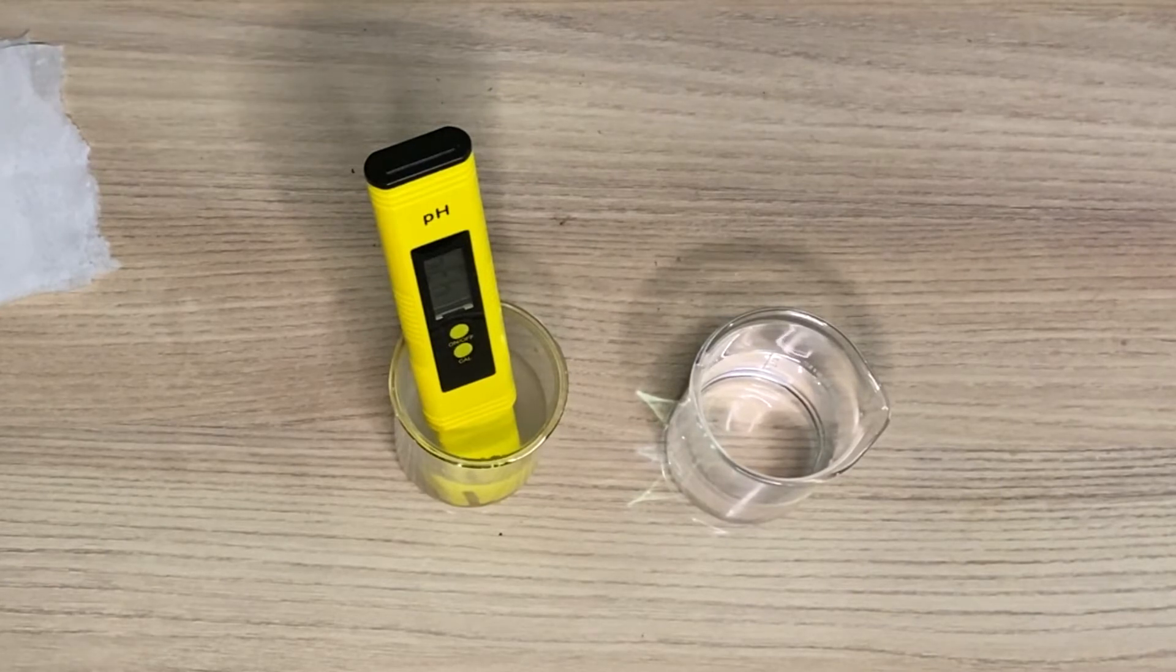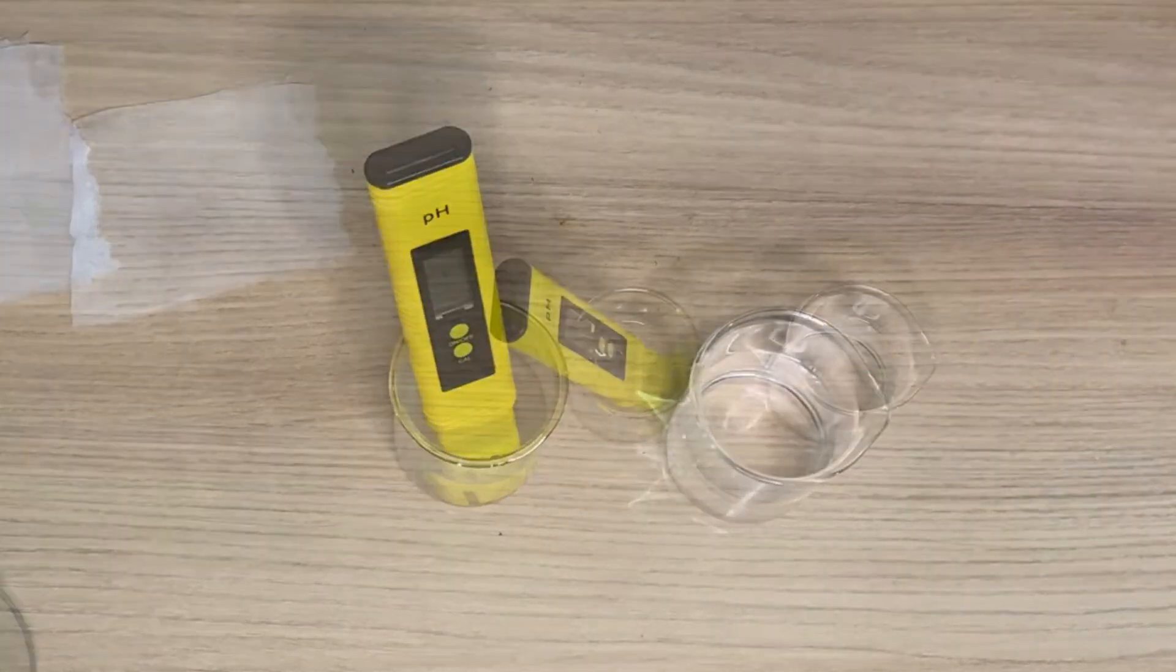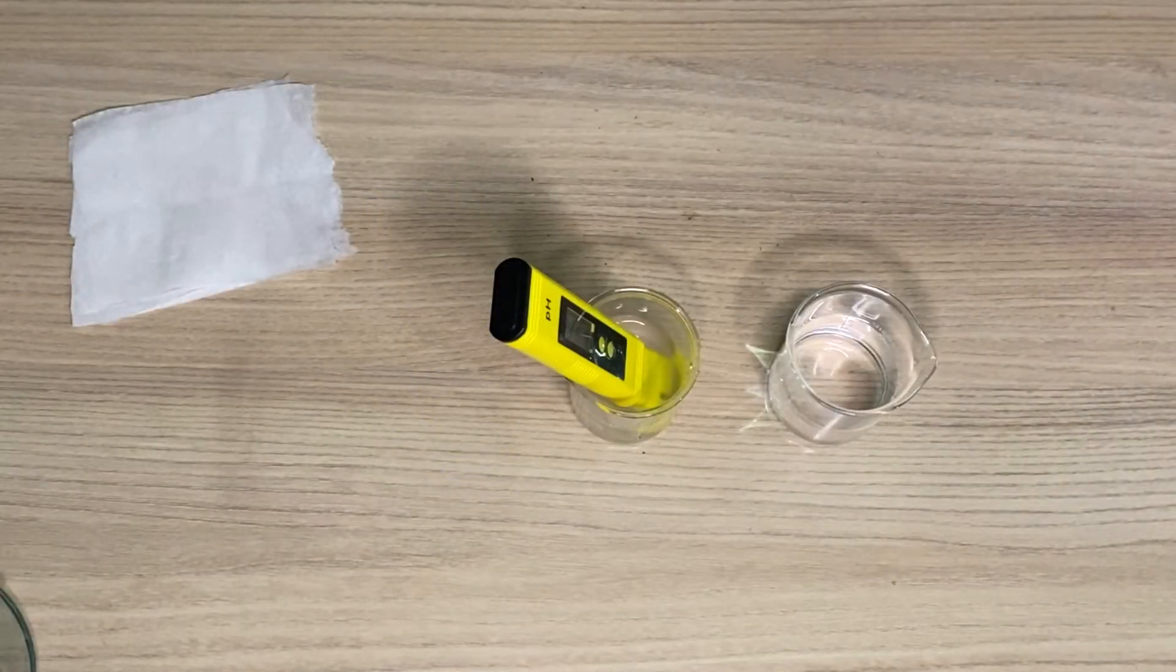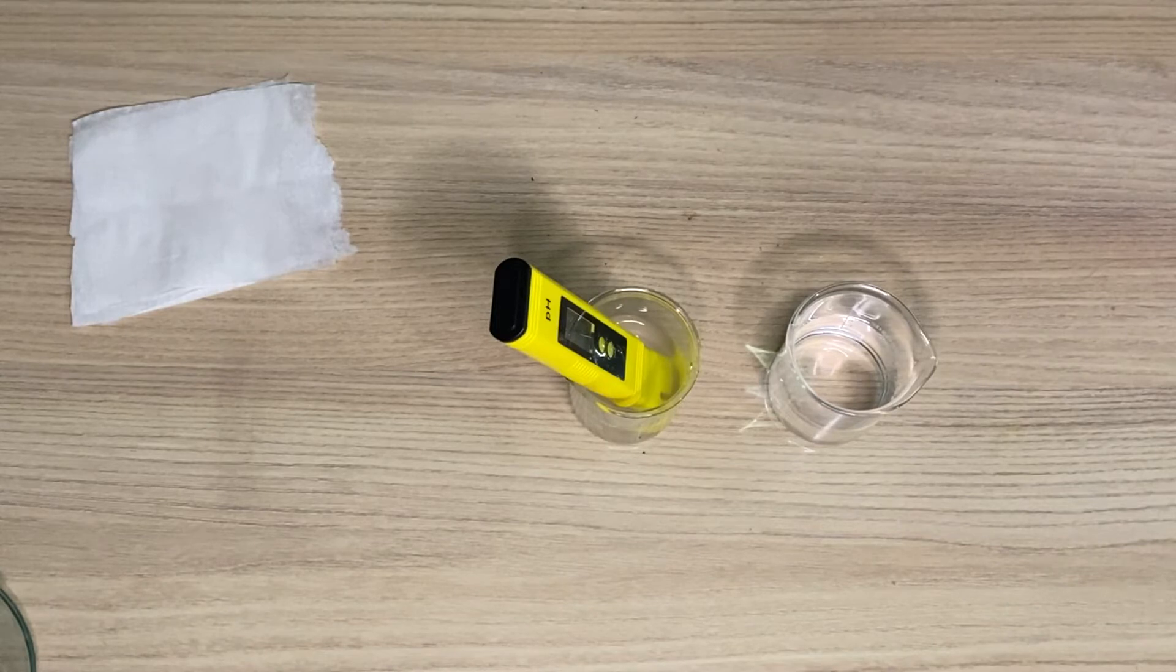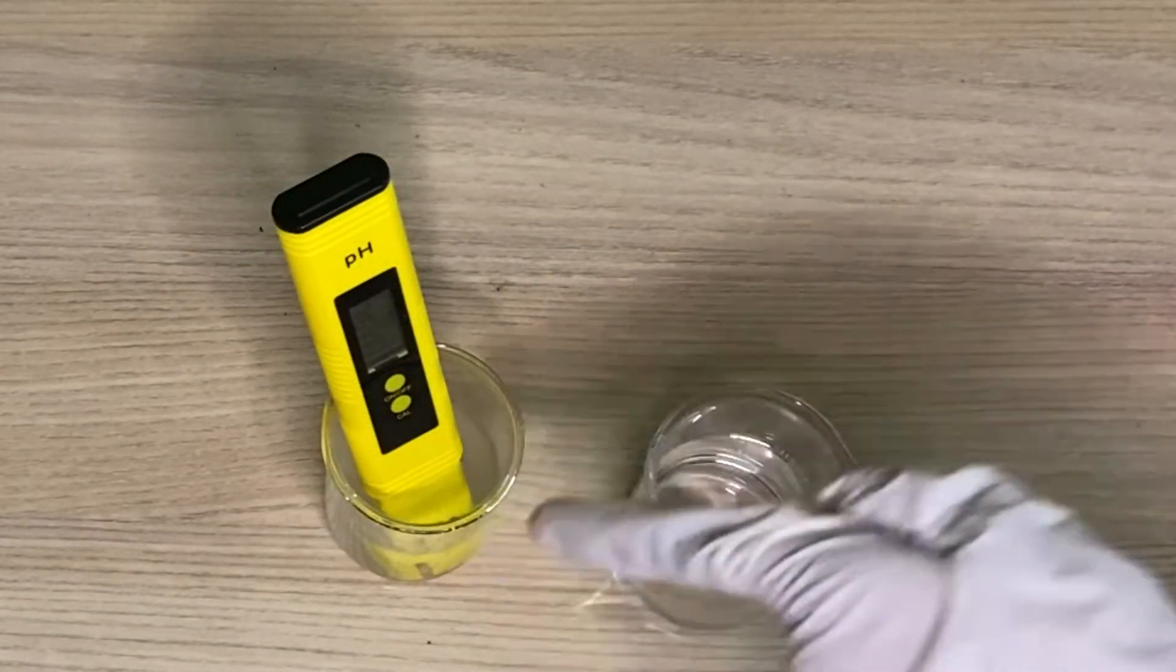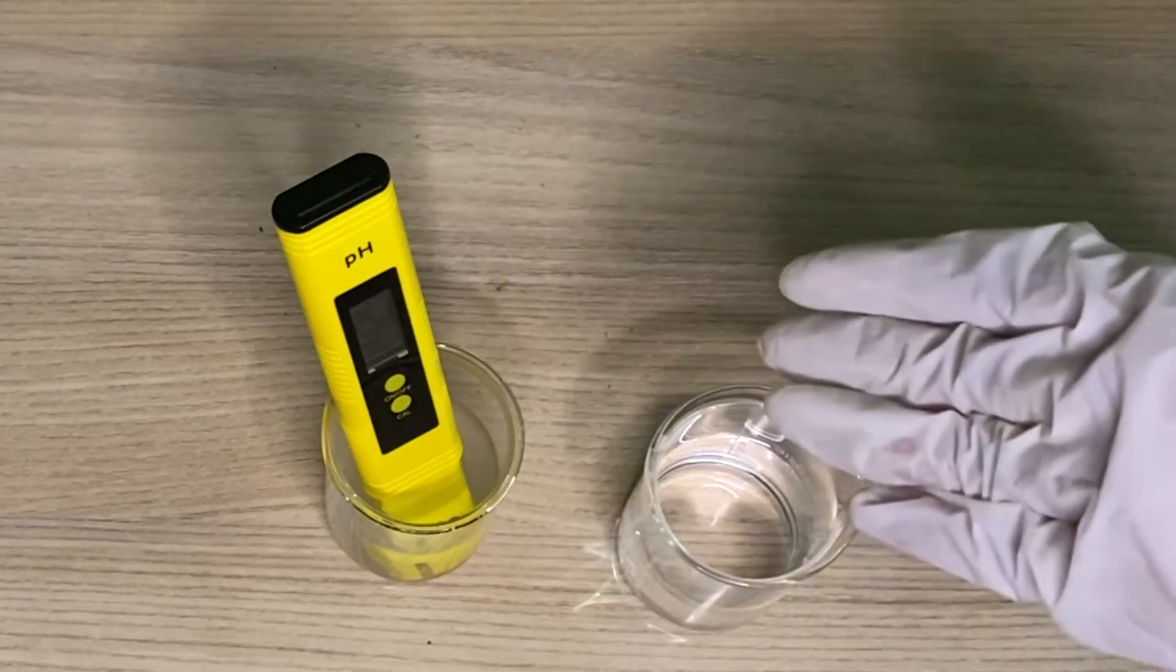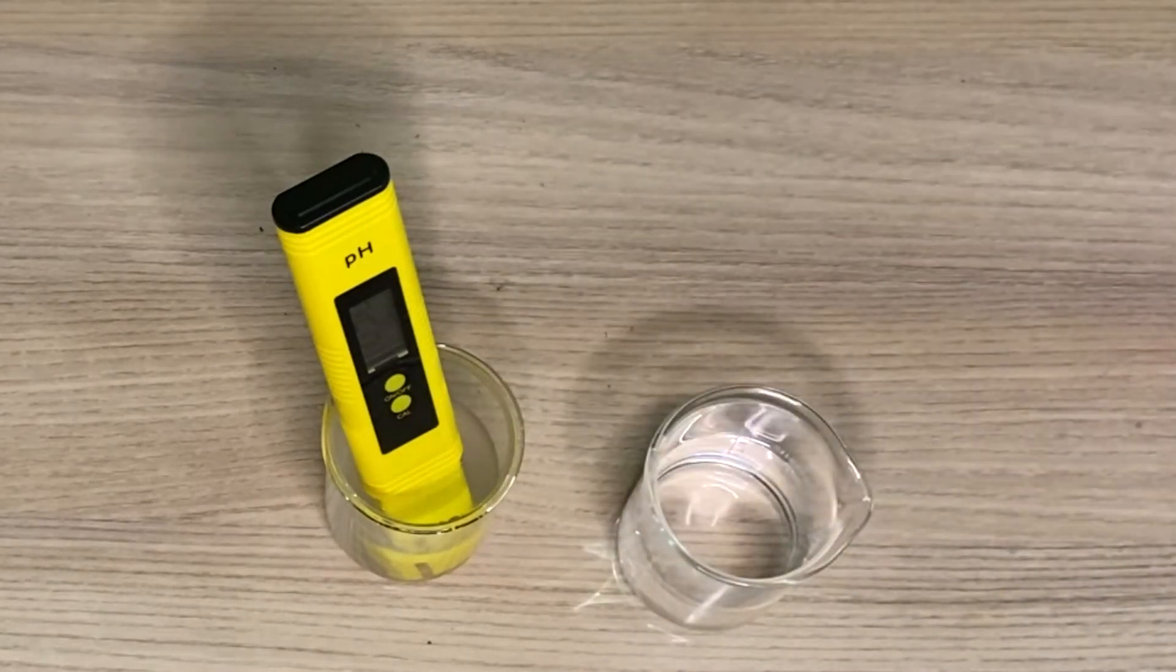It will be stable at a particular pH. That is the one which we need to note. Give it some 10 to 15 seconds. It will be stable at one point. Okay, do you see that the pH is now stable at 4.24? So this is the pH of the product.